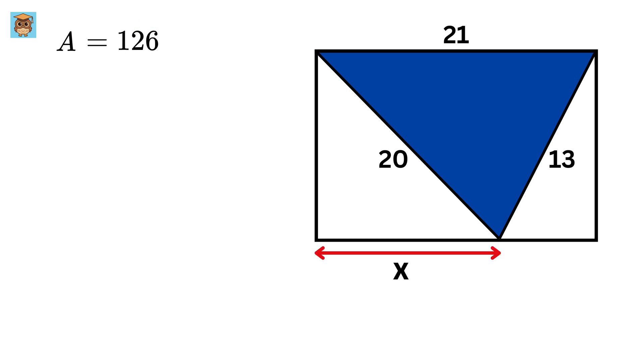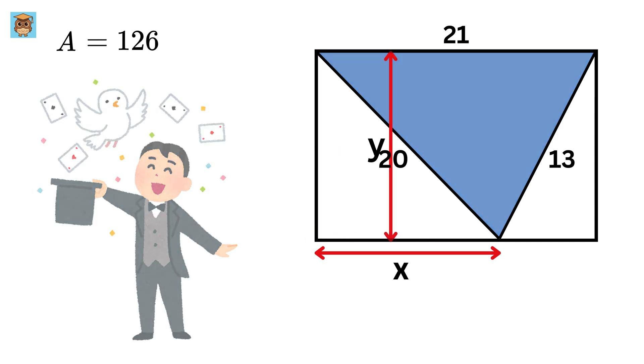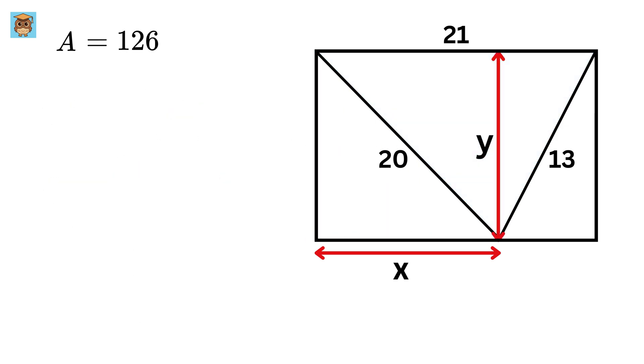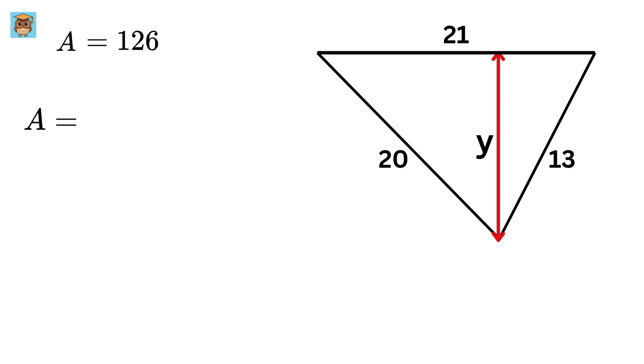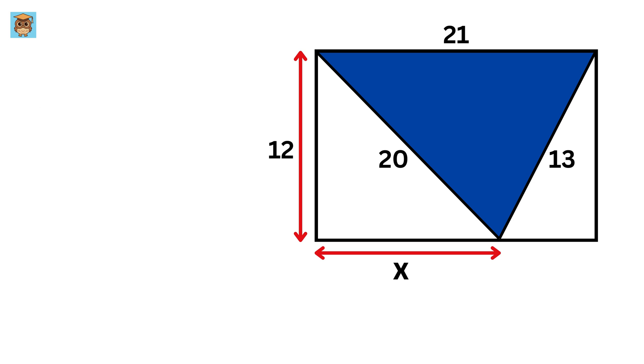Now, let us label this length as Y, so here comes the magic. This length is also the same as the height of this triangle, right? Therefore, the area of this triangle can also be given as this base, or 21 times this height, or Y over 2. Therefore, 21Y over 2 equals this 126, or Y equals 126 times 2 over 21, or 12 units. Noice.